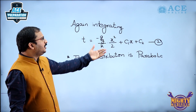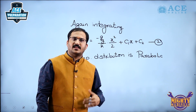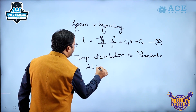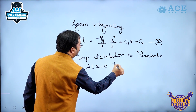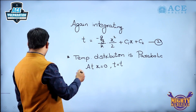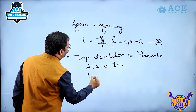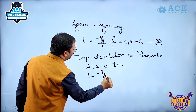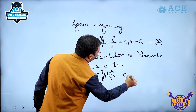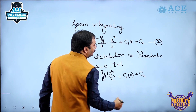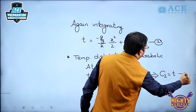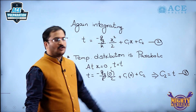Now we need to determine the values of C1 and C2. For that, let us use the boundary conditions. The first boundary condition is: at x = 0, the temperature T = T_w. Substituting into equation 2, we get T_w = −(qg/k)·(0)/2 + C1·0 + C2. From this, C2 = T_w. Let us take this as equation 3.